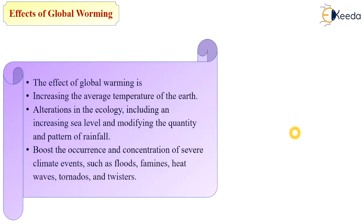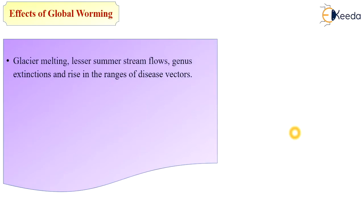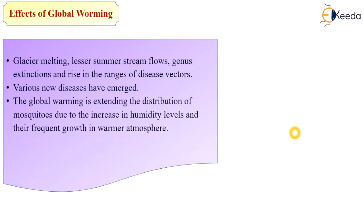Global warming also boosts the occurrence and intensity of climate events such as floods, famines, heat waves, tornadoes, and twisters. Further effects include glacier melting, lesser summer stream flows, species extinctions, and a rise in the range of disease vectors. Various new diseases have emerged because of global warming, and it is extending the distribution of mosquitoes due to increased humidity and warmer conditions. Marine life is also affected.